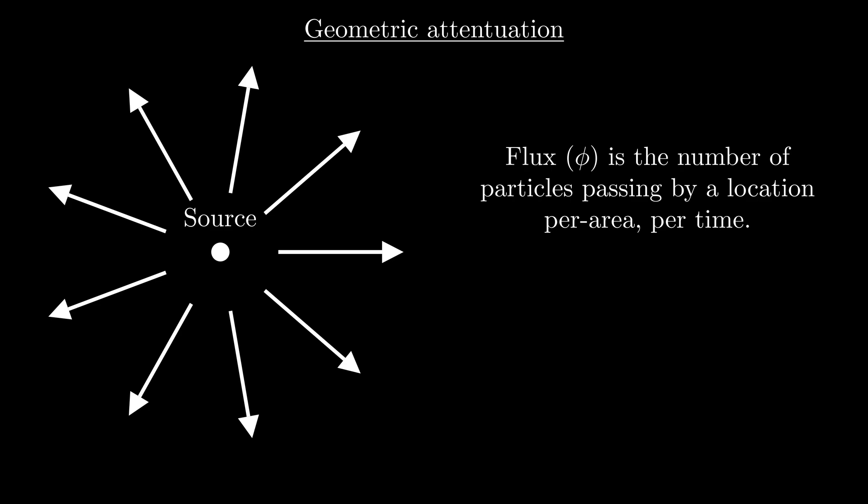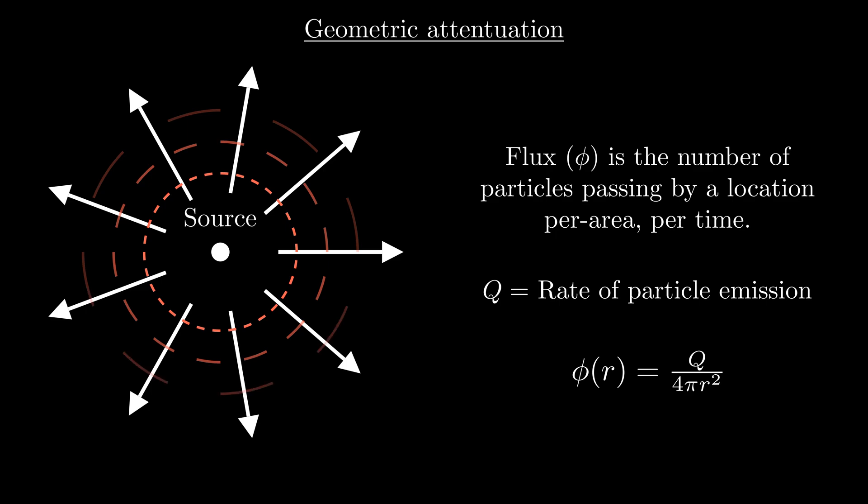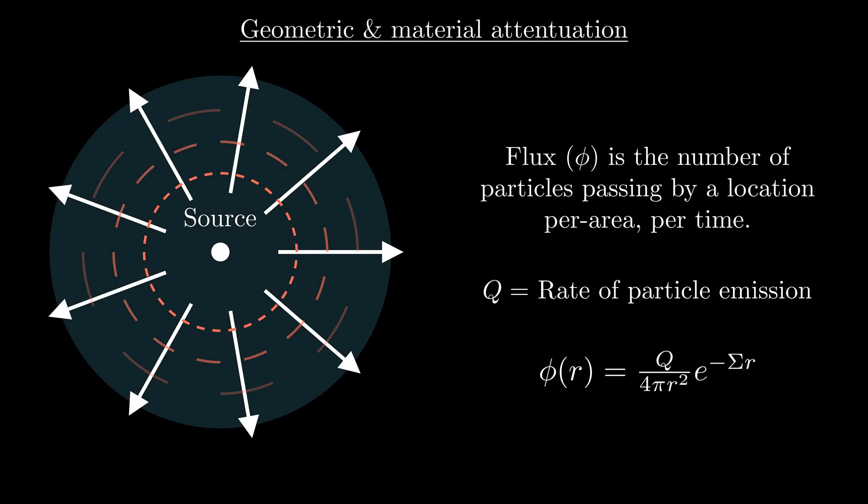Flux is just a measure of how many particles are passing through a location every second on a per area basis, and we represent it with the Greek letter phi. More accurately, flux is the path length density with units of per area per time. At a distance r away from the source, the flux will therefore be the rate at which particles are being emitted, q, divided by the area of a sphere with radius r. This area grows as r increases, so flux drops off proportional to 1 over 4 pi r squared. This reduction in flux as particle paths spread out in space is called geometric attenuation. If our point source was placed inside a sphere of material, all we would need to do to update our phi formula is to add in the term from earlier which describes the material attenuation that would occur, e to the negative sigma r.